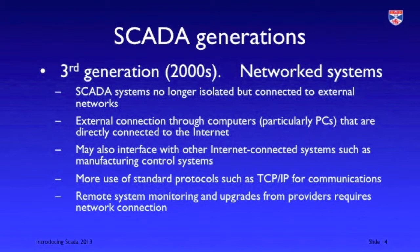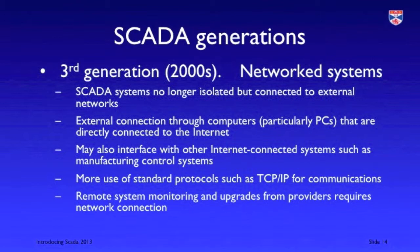The third generation of SCADA systems were introduced from about 2000 onwards, and these were the first SCADA systems to be connected to the internet and to communicate using internet protocols. This sometimes happened through PCs associated with the system that were used for the user interface and often connected to the internet. It's also the case that SCADA systems were sometimes connected to the manufacturer's systems, allowing remote debugging and remote maintenance so that systems could be updated directly and new versions introduced. What this meant was that these systems were now accessible to the world and, because they could be accessed through the internet, they were now vulnerable to external attack.